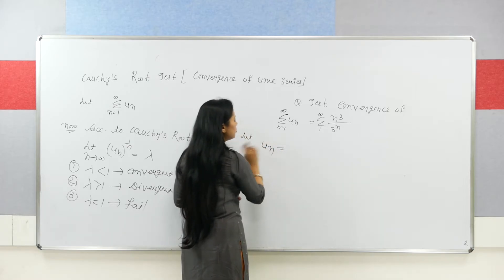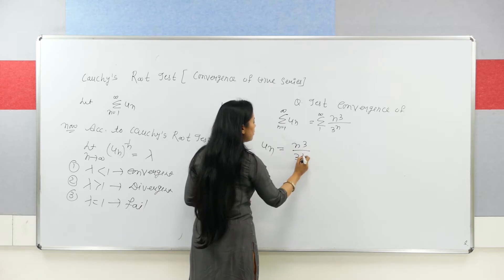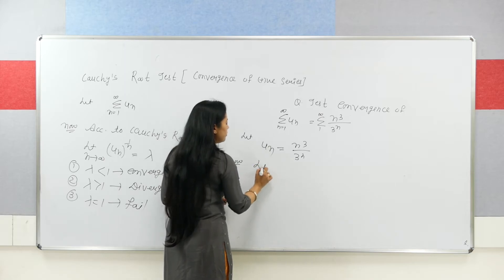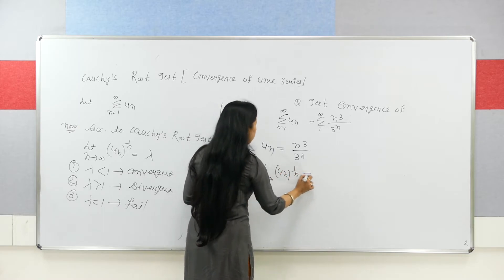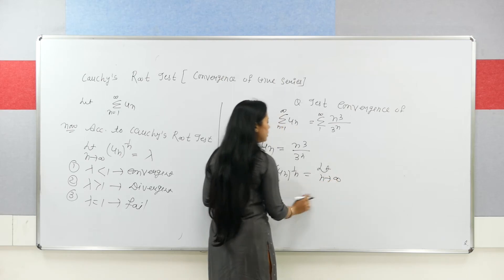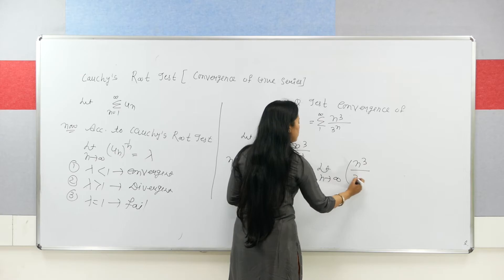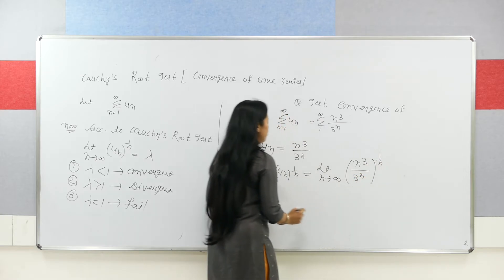Take out its nth term and the nth term will be n³ upon 3 to the power n. Now we calculate the limit, limit n tends to infinity un to the power 1 by n, then it will be limit n tends to infinity n³ upon 3^n, whole to the power 1 by n.